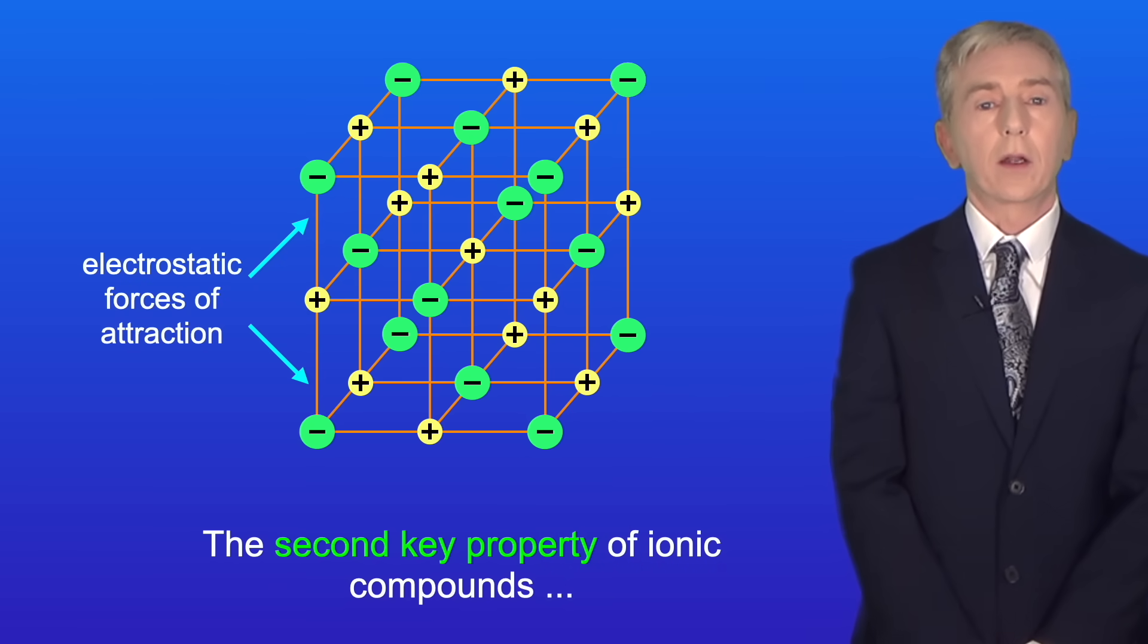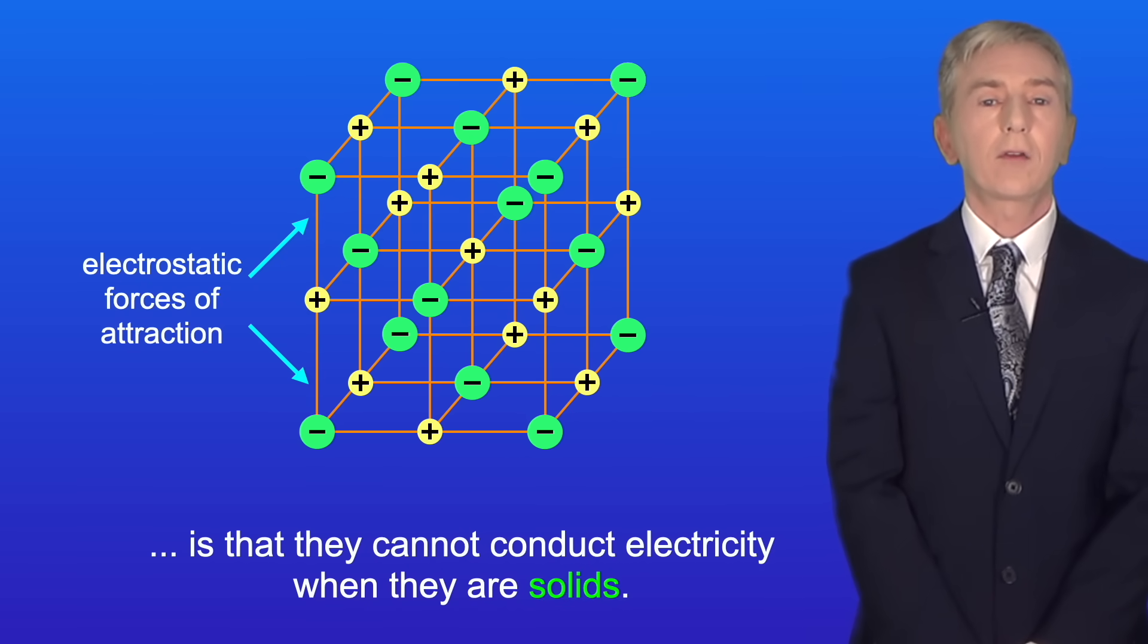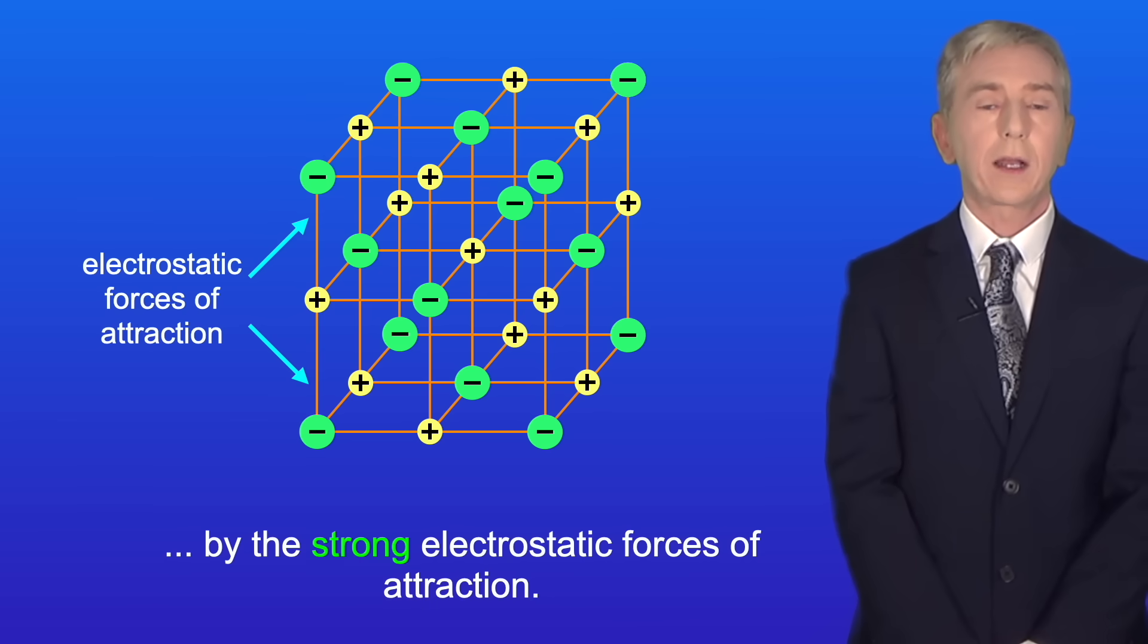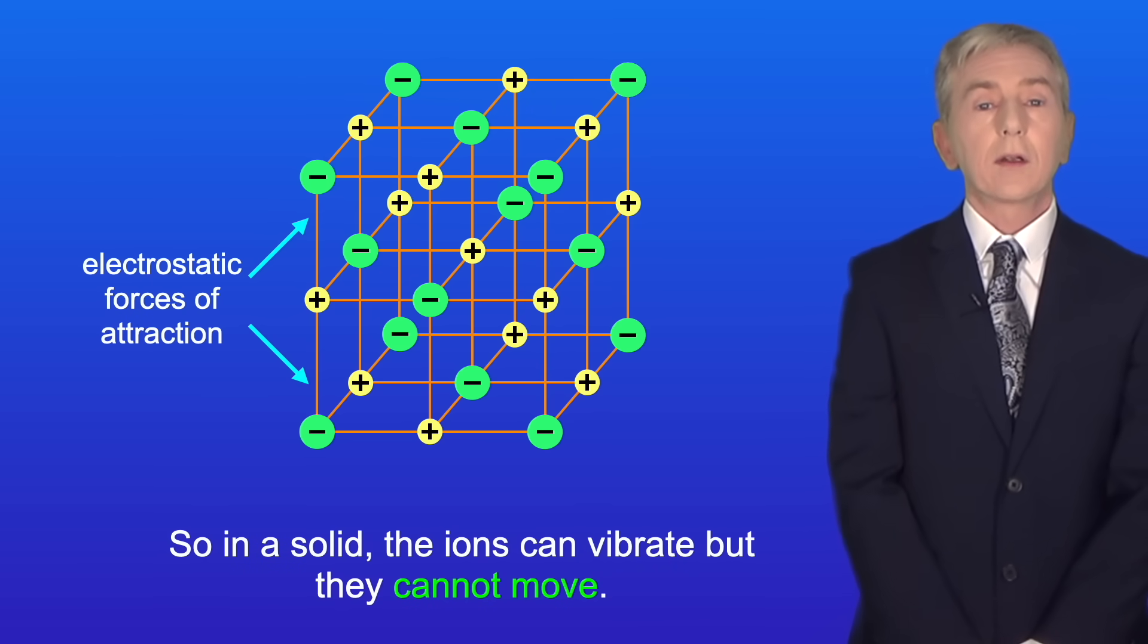The second key property of ionic compounds is that they cannot conduct electricity when they're solids. In a solid, the ions are locked in place by the strong electrostatic forces of attraction. So in a solid, the ions can vibrate, but they cannot move.